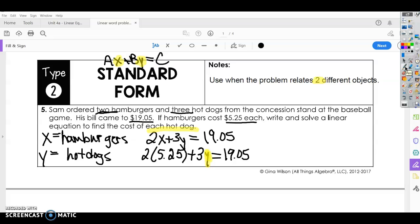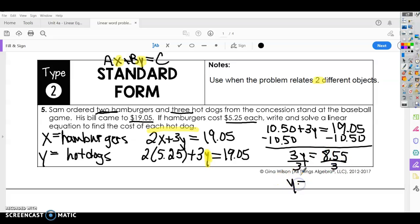Alright, so 2 times 5.25 is $10.50 plus three hot dogs, so we're still trying to figure out how much that cost. Now we're going to subtract $10.50. We're just solving for Y, so subtract $10.50 from both sides. 3Y equals, what is this, $8.55. Divide both sides by 3. 3Y equals, divide that out, you get $2.85. Alright, so what does that mean? That means that $2.85 is the cost of one hot dog. So we knew that $5.25 was the cost of a hamburger, and now we know that $2.85 is the cost of a hot dog.